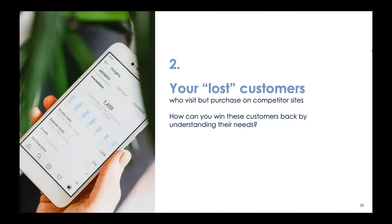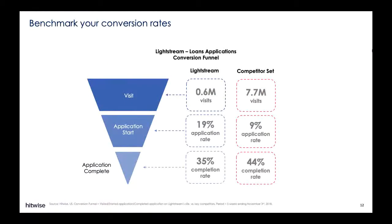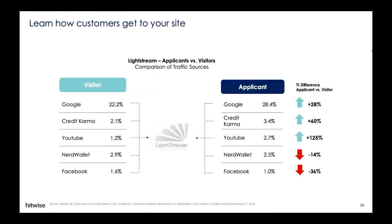The second segment we'll focus on is lost customers. How can you win customers who ended up purchasing from a competitor? We're going to highlight how to gain these customers back through search and clickstream insights, featuring a services brand. Lightstream is a consumer loan division of SunTrust Bank. Like many financial services brands, Lightstream focuses on conversions through its online application. When benchmarked against its competitor set, Lightstream shows a higher application start rate, but application completion rates fall short — its registering rate is 35% compared to 44% from its competitive set. They need to learn how to get more customers to their site by pre-empting applicants to visit. If they look into top traffic sources used by its completed applicants, Lightstream can prioritize those sites for advertising and promotions, which can help drive more buyers to their site than to competition.